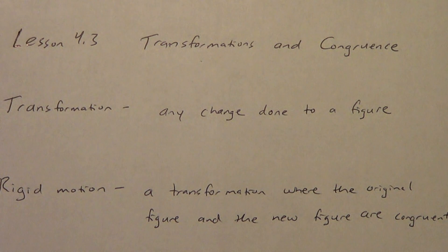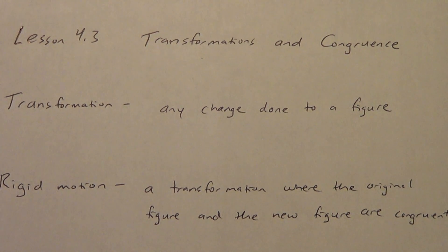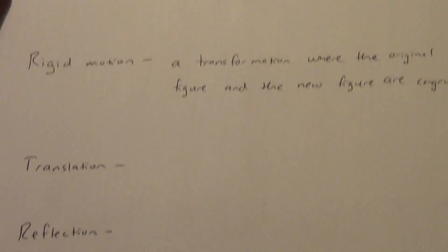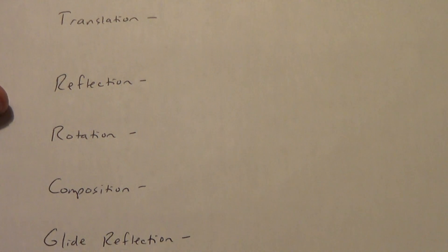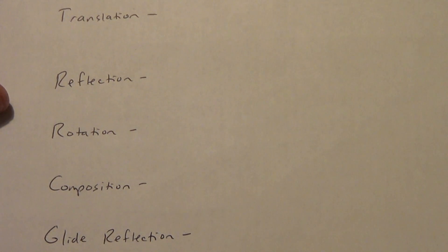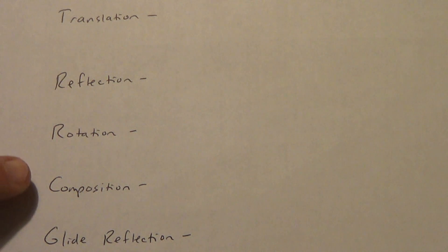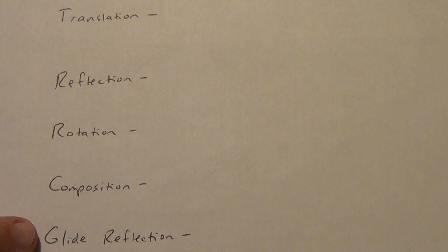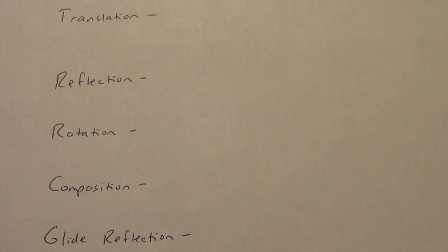There are five different types of rigid motions we're going to talk about: translation, reflection, and rotation — those are the three main ones. Then we get into something called a composition, and a glide reflection is a specific type of composition. We'll talk about the three main ones first, then the last two.